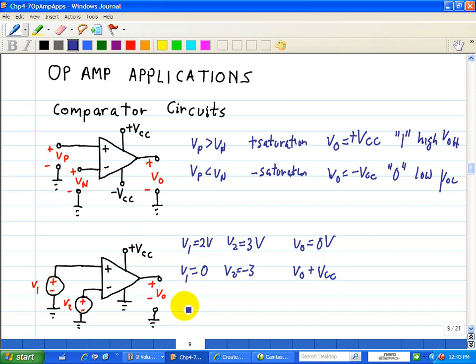And finally, when V1 is equal to negative 2 volts, and V2 is negative 3 volts. Since V1 is greater than V2, then VO goes to the positive VCC state. So whatever VCC is, that's what the output is going to be. So if it's 10 volts, then the output voltage will be 10 volts. If VCC is 3 volts, then VO will be 3 volts.